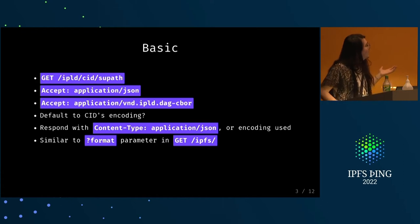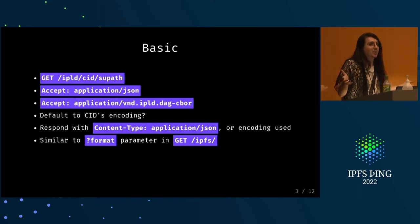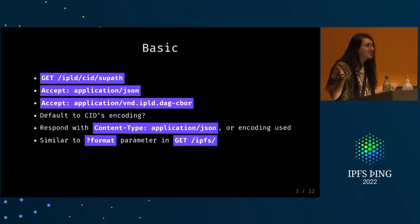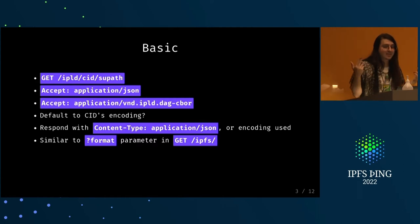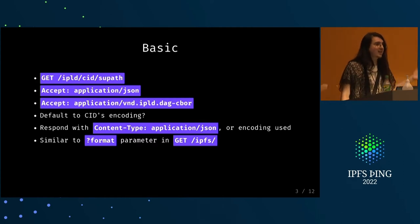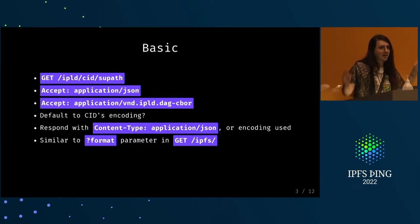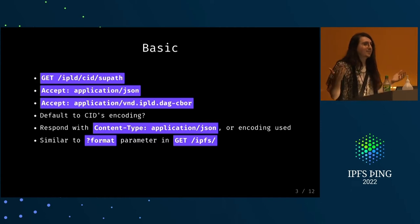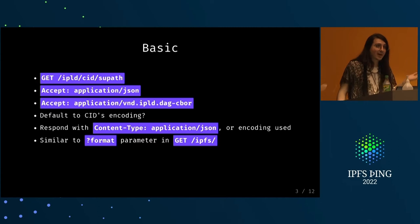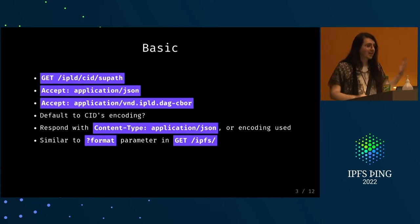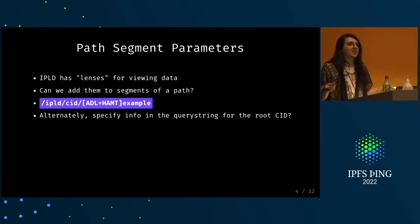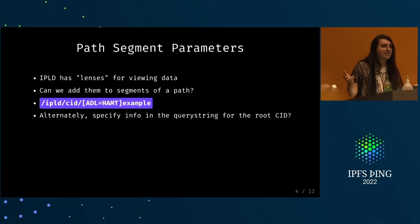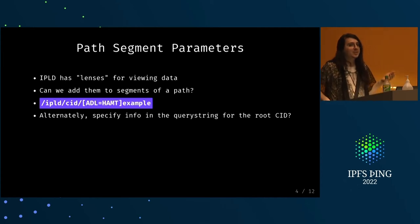Similarly, if we want to download data and we don't care too much, we probably just want the gateway to give us whatever the encoding is so there's no extra work being done. In the response, it'll tell us what the encoding is with the content-type response header. This is kind of similar to what can already be done in the IPFS gateway, however it extends it with features that would be kludgy right now. This centers the strengths of IPLD, which is the universal data model and the way of converting between things. But IPLD isn't just about the raw data model — we also have useful lenses for viewing data.